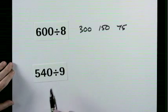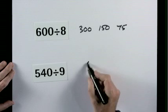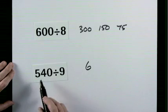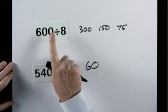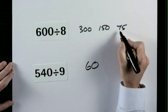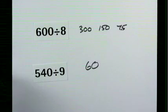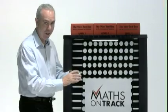54 is divisible by 9. 9 goes into 54, 6 times. So 9 goes into 540, 60 times. If this had been 60 divided by 8, the answer would be 7.5. Are you ready?